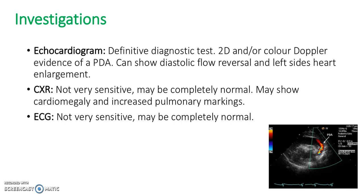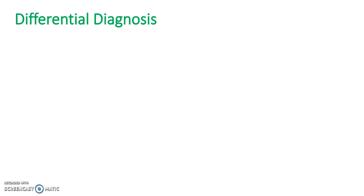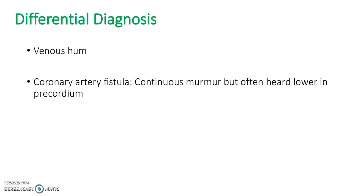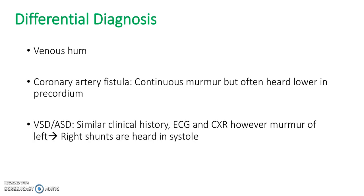Here we can see a picture of an echo showing a PDA. With what we've talked about so far, what do you think the differential diagnoses will be? A venous hum or coronary artery fistula — this is a continuous murmur, but it's often heard lower in the pericordium. VSD and ASD have a similar clinical history with ECG and chest x-ray findings; however, the murmur of left-to-right shunts is heard in systole — that's how you can tell the difference. Also aortic regurgitation, which normally presents at an older age with exercise intolerance, so it wouldn't really be seen in a newborn baby.